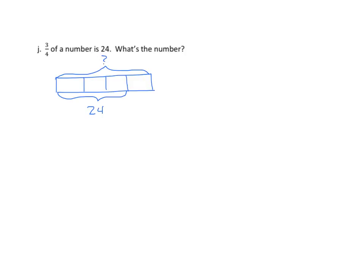So we have three units equals twenty-four. One unit equals twenty-four divided by three. That equals eight. We're going to find the four units because there's four units in all. So four units equals four times eight equals thirty-two. So our answer is thirty-two. That's the original number.